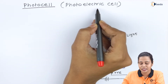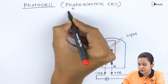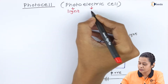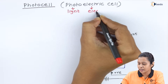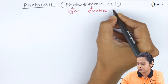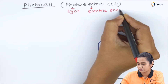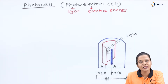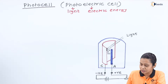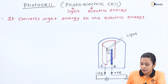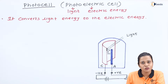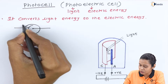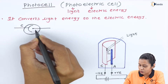We know it is the photoelectric cell. Photo means light, and electric means electrical energy. So this photocell converts light energy into electrical energy. We will see what is the symbol for photocell — the symbol has a cathode C and an anode E.